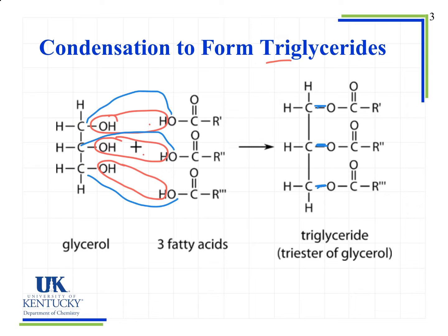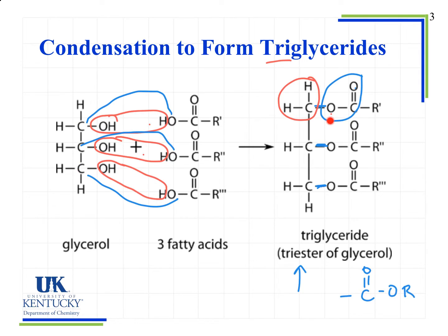Now that we've formed a triglyceride, what functional group do we have in each tail? You may notice it's also called a triester — it contains an ester group. An ester looks similar to a carboxylic acid: we have a C double bonded to O, and we still have an O group, but now we have an R group or chain of carbons attached to that oxygen. There are three ester groups in the triglyceride, each with a C=O and O-C linkage.